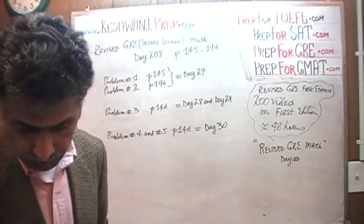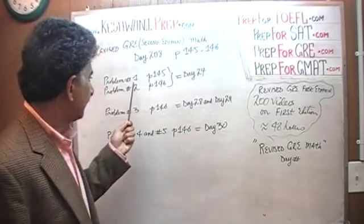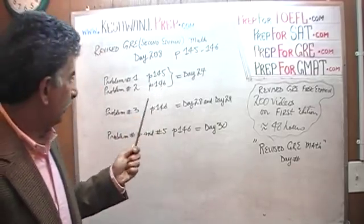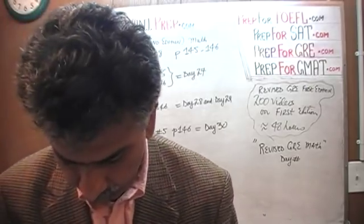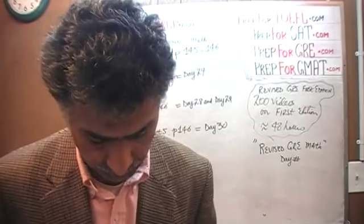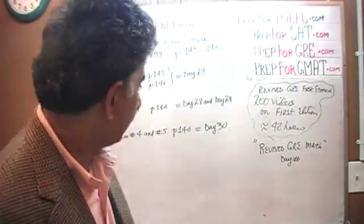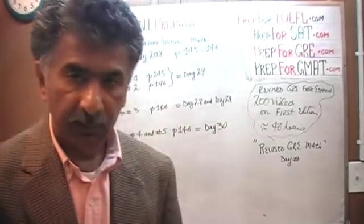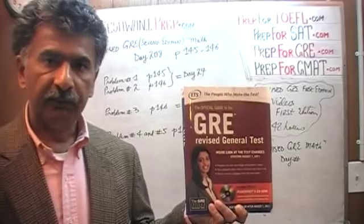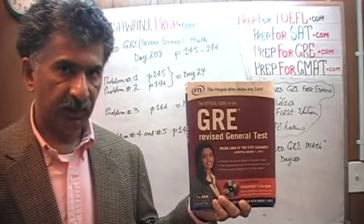The very first problem, this is a set of easy questions, they are very simple. Problem number 1, problem number 2, 3 and 4, all of these problems that you see on page number 145 and on the next page, page 146, problem 1 through 5, they are all the exact same problems that appeared in the first edition of the book, which I have already solved. I have solved all the math problems in this book.